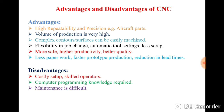The second advantage is that volume of production is very high. Production is a process of converting raw material into a finished product, and the production process consists of a number of manufacturing processes. In a manufacturing process you convert raw material into a semi-finished product, whereas in a production process you convert raw material into a finished product. When you are using a CNC machine, your volume of production will be very high.